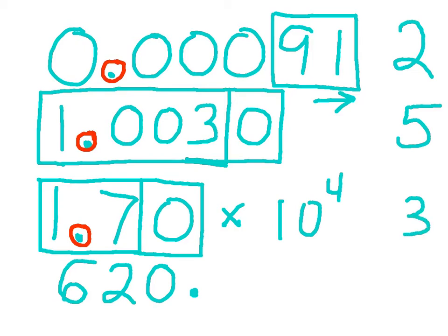And finally, 620 with a decimal. So we box the 6 and the 2. We acknowledge the dot. And then we continue to box everything to the right of the numbers already boxed, and count our significant digits. And in this example, there are 3 significant digits.